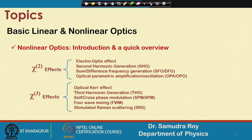In this particular class we will cover the introduction of nonlinear optics and a quick overview. There are two major effects in nonlinear optics: one is called the chi-2 effect and another is called the chi-3 effect.